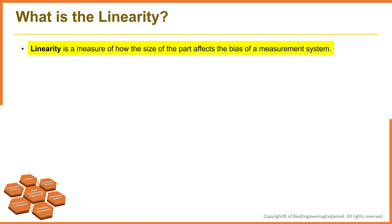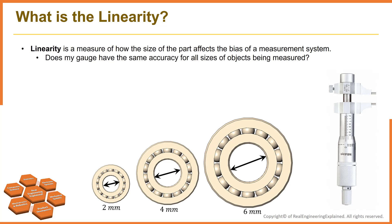Linearity is a measure of how the size of the part affects the bias of the measurement system. It is the difference in the observed bias values through the expected range of measurement. Gauge linearity tells you how accurate your measurement system is across the expected range of measurements — does my gauge have the same accuracy for all sizes of objects it measures? You cannot assume constant bias throughout the measurement range. Linearity is an indicator of consistency of measurements over the entire range of measurement.